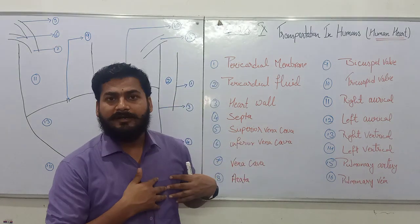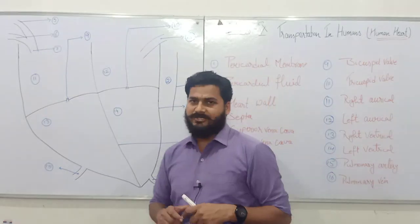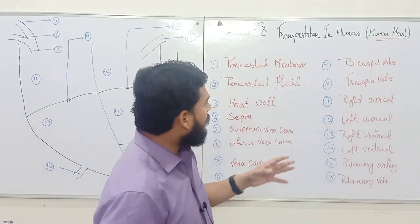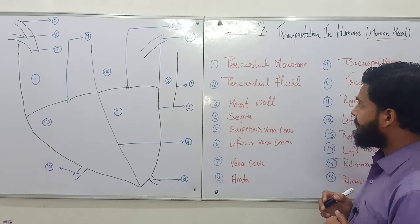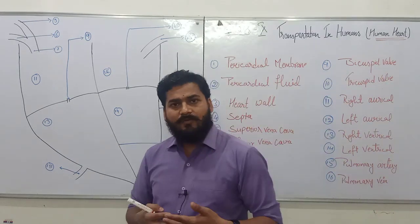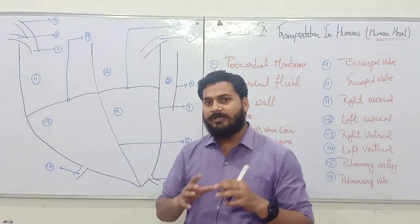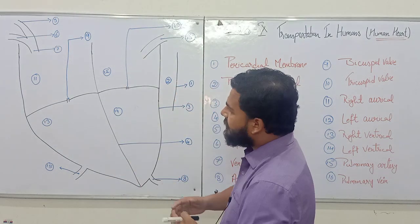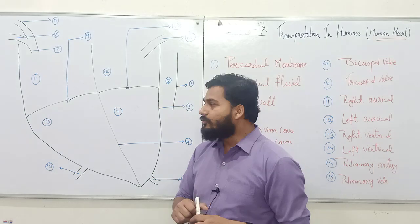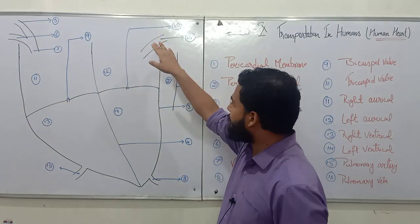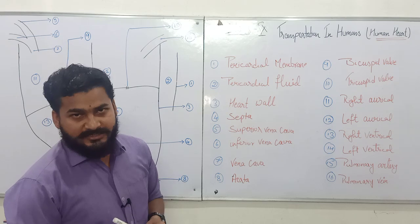That organ is called the human heart. So that's the topic for today. We'll discuss the human heart in two lectures. First, today I'm going to talk about the different components of the human heart — I have labeled 16 components. Then in the next lecture we'll talk about the functioning of each, and how they all come together to function as one unit, one organ. I have drawn a diagram and labeled the positions of different components.